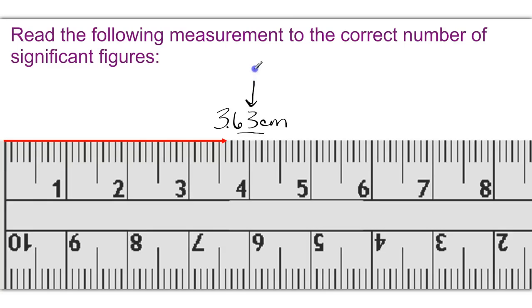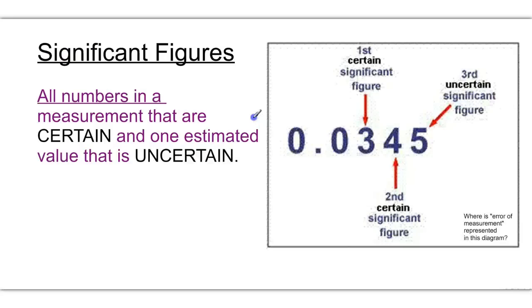Remember, you can only have one estimated value as your uncertain value in the number. We can't estimate anything past the 3 because we don't have any lines or markings to tell us, even for certain, about the 3. That was our estimated value. So significant figures are all numbers that are certain plus the one estimated value or uncertain value. That last number can vary depending on each trial that it's read or the reader.